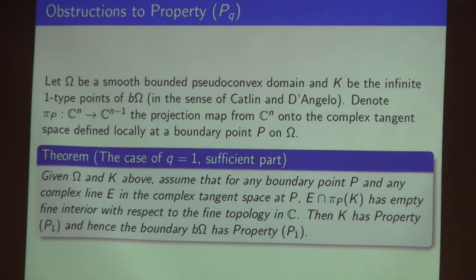We naturally ask whether the converse of this theorem is true. I work with q equal to 1 for a sufficient part. I work with smooth bounded pseudoconvex domains and denote K as the infinite points. What happens here is I take a complex line intersect with the projection map from C^n to C^{n-1}. Namely, I project those infinite points onto this complex line.